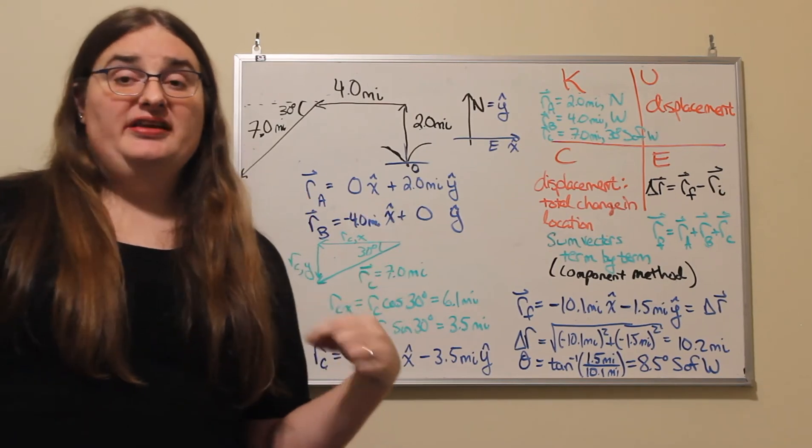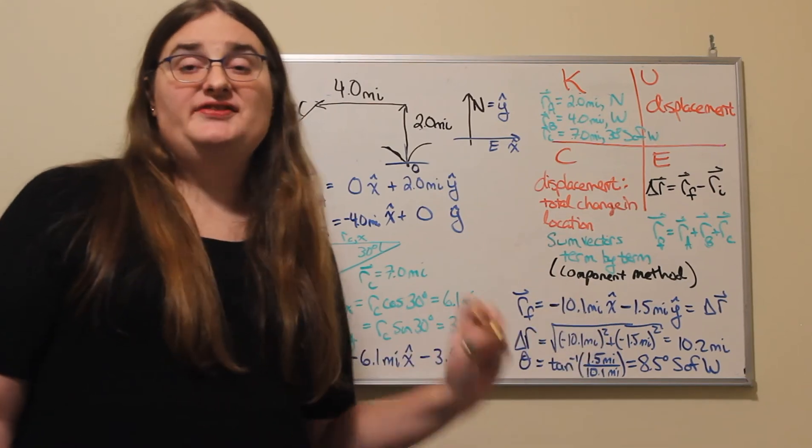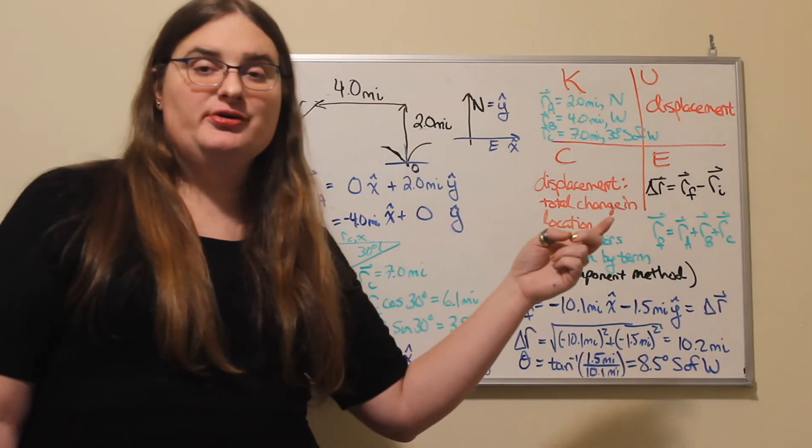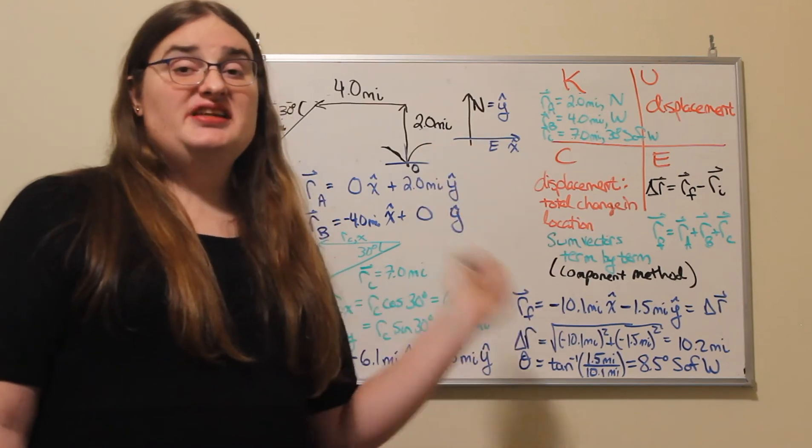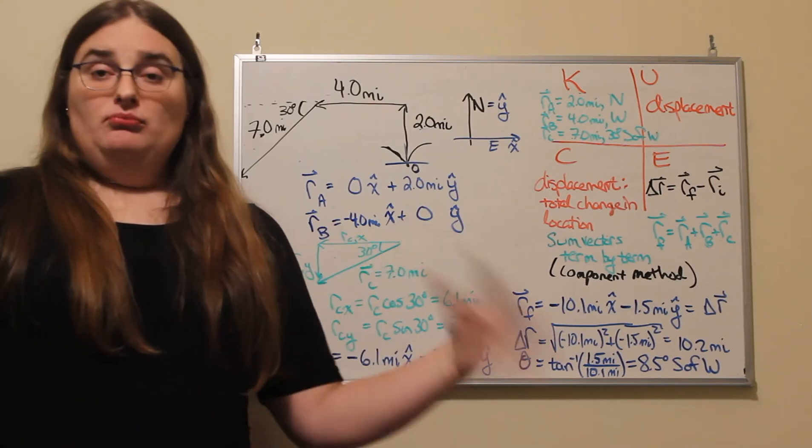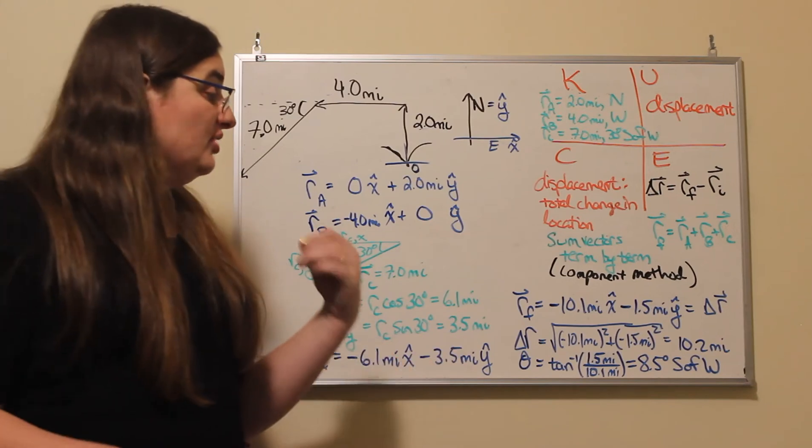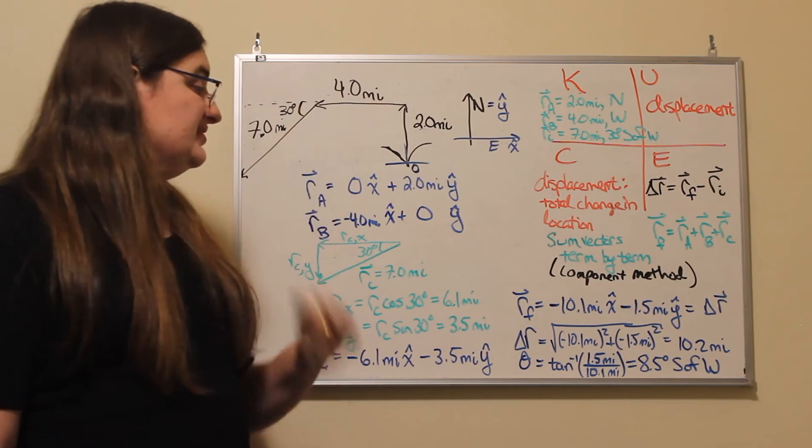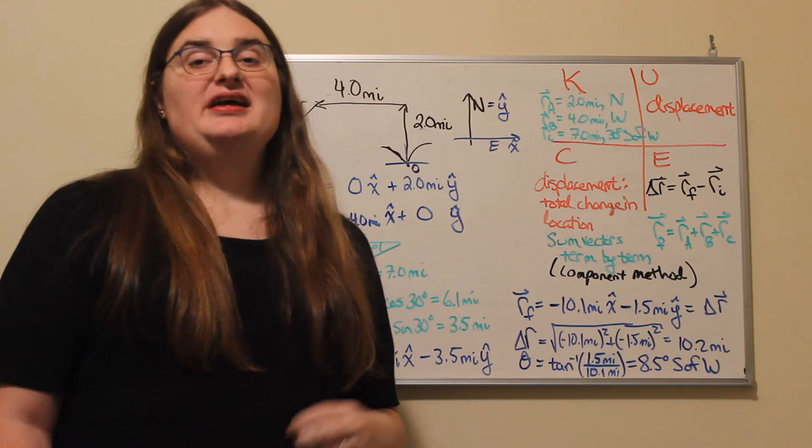Just about every scientific calculator that I've ever used doesn't do that, so it's always important to make sure that you include a reference. So if you want to say south of west, we get an angle of 8.5 degrees south of west.